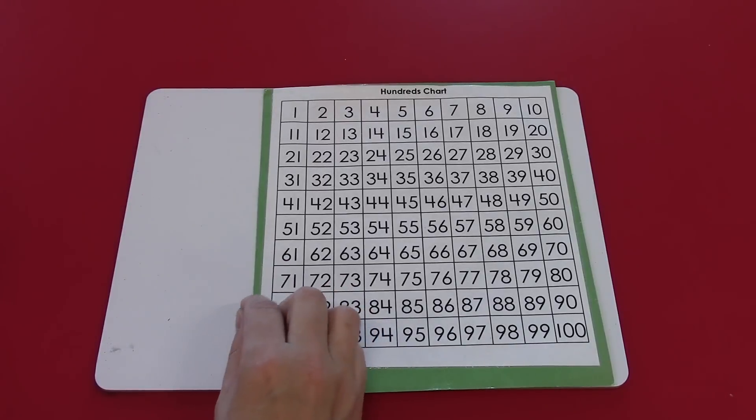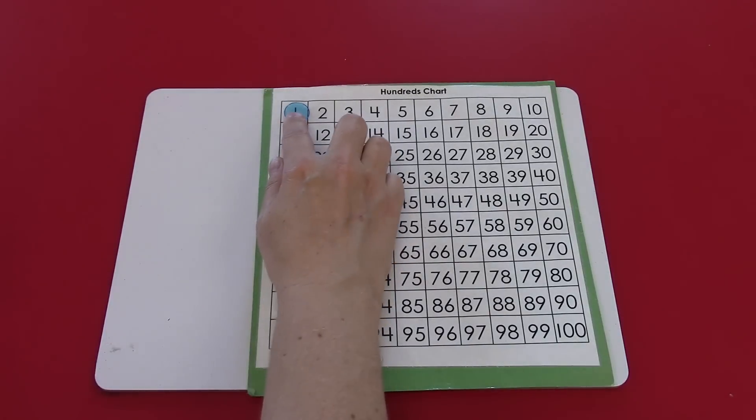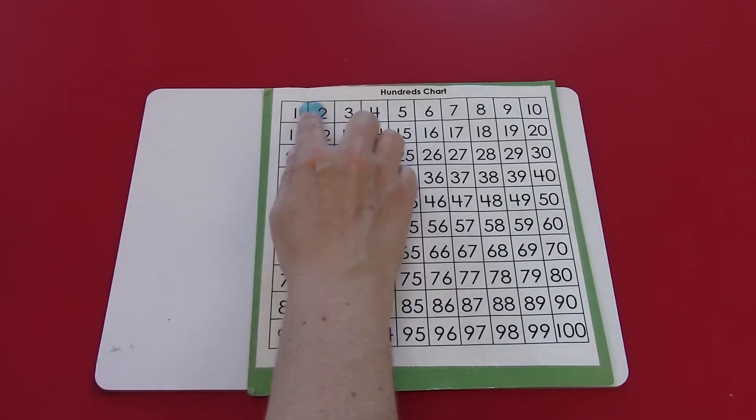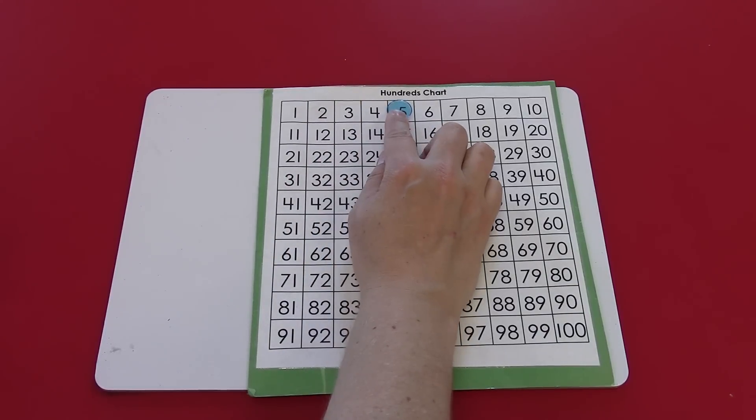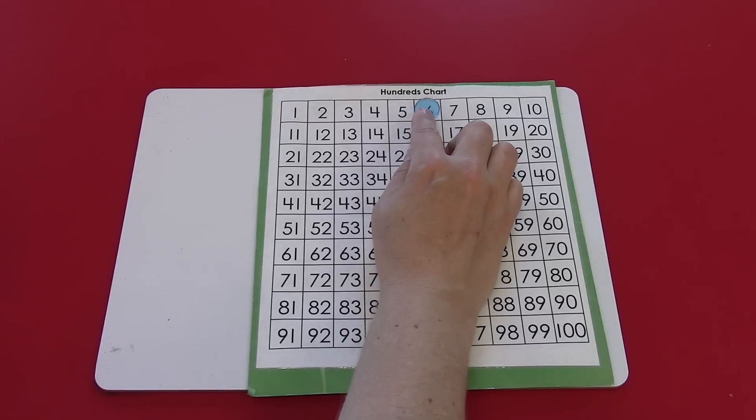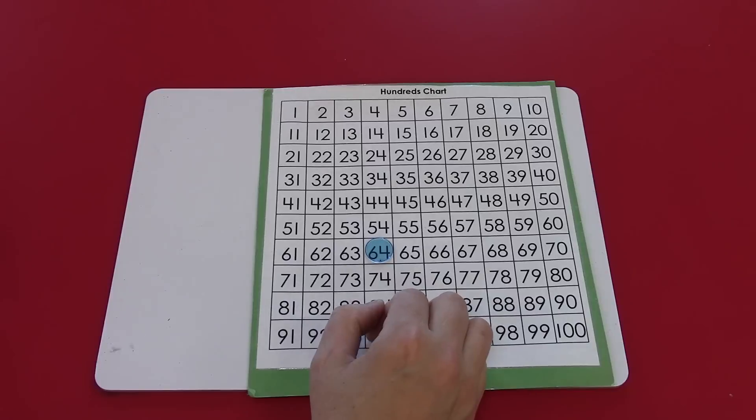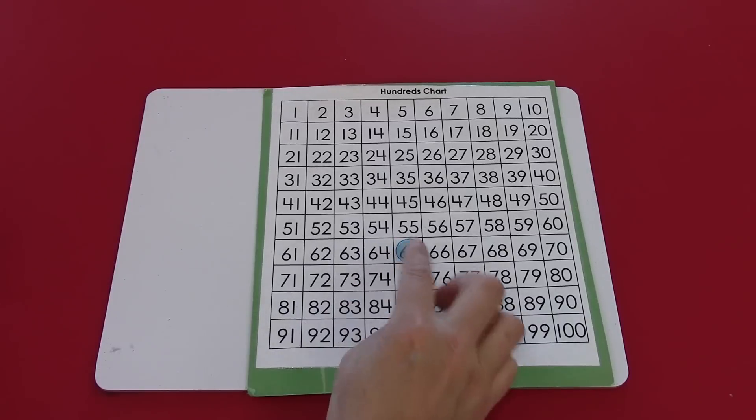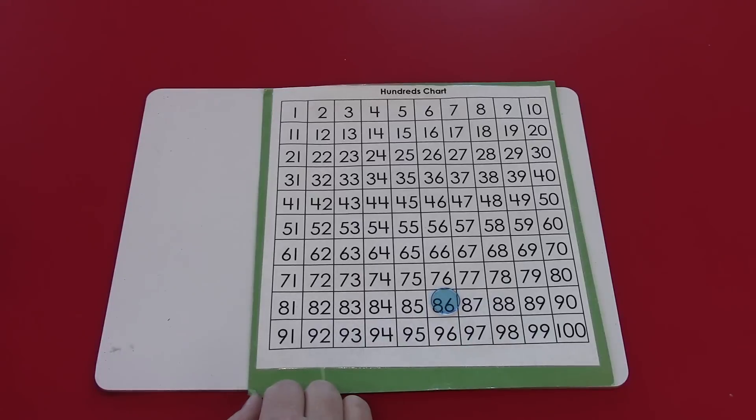Let's do a bit of a review. On a hundreds chart when we go to the right we get bigger by 1. One, two, three, four. We can think 4 plus 1 is 5, 5 plus 1 is 6 and so on. It works anywhere on the hundreds chart. 64 plus 1 is 65. 85 plus 1 is one to the right, 86.